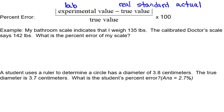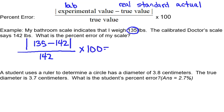So my lab value is 135 pounds. So there's my experimental value. The true value is the value from the doctor's office, 142. Now, notice that these are in absolute values. And then in the denominator should be the true value. So that is going to be 142.